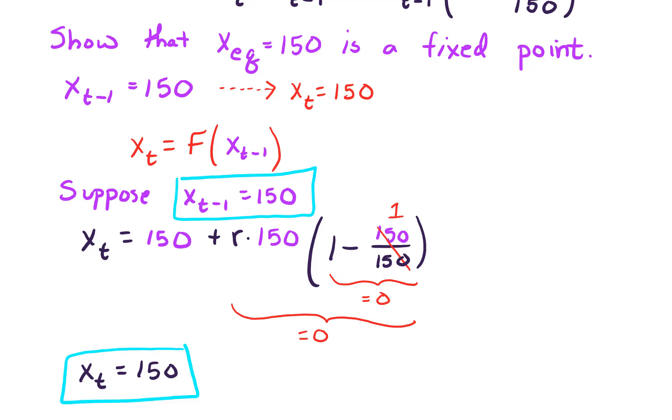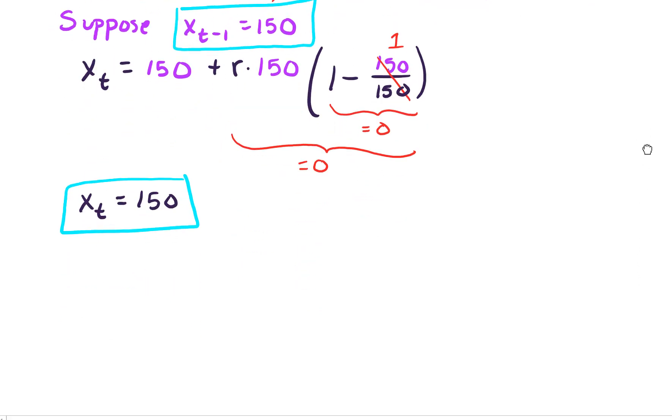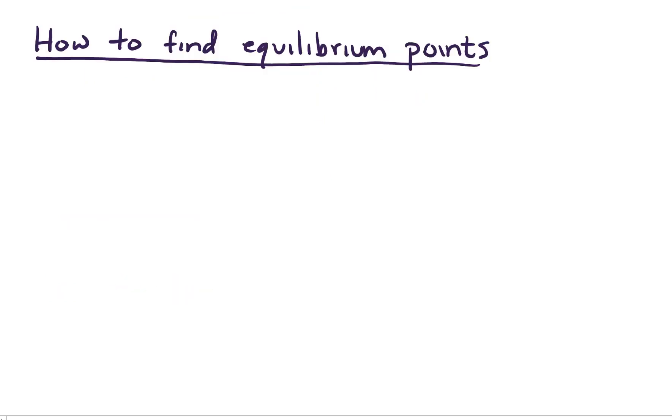Okay, so the idea is what goes in is what comes out and that's what we mean by a fixed point. Now, I'd like to show you how do you find fixed points because in this last example I just gave it to you and said, hey, go and verify that it is a fixed point. But in general we want to figure out how to find equilibrium points.